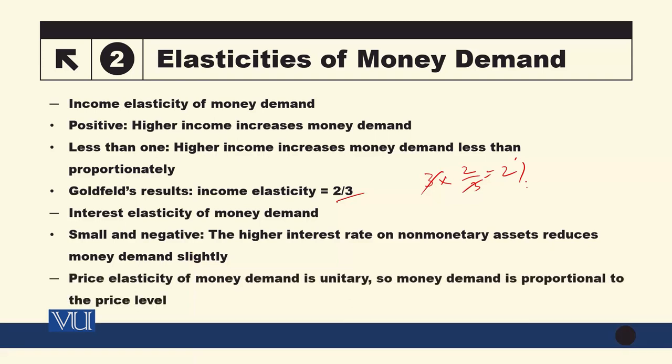Numerical estimates from various studies suggest that the interest elasticity of money demand is approximately -0.1. This means if the interest rate increases by 1%, money demand falls by 0.1%. However, students often make a mistake here. For example, if the interest rate goes from 5% to 6%, this is not a 1% increase — it is a 1 percentage point increase.